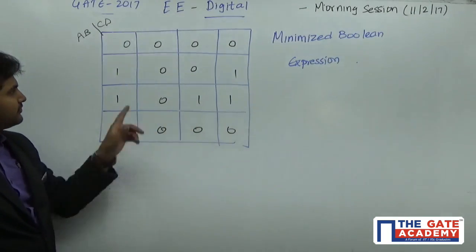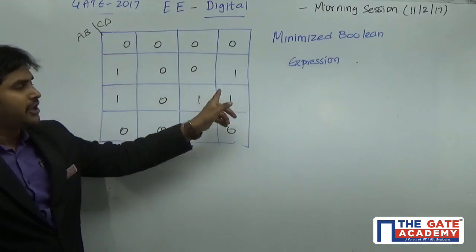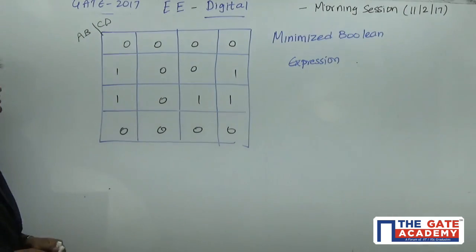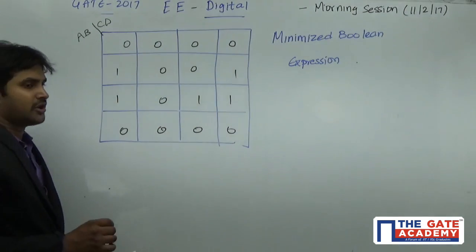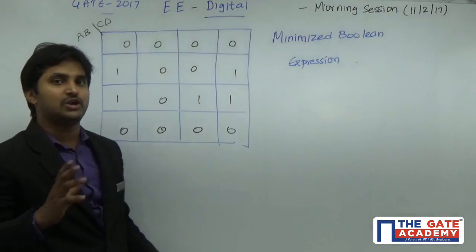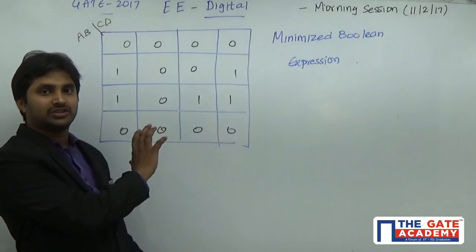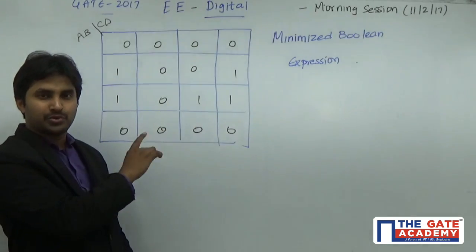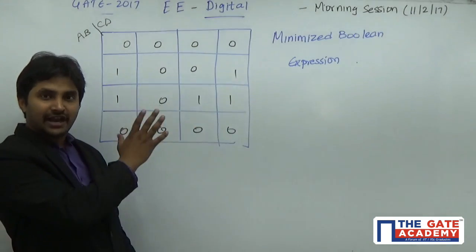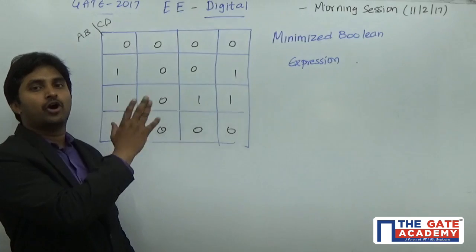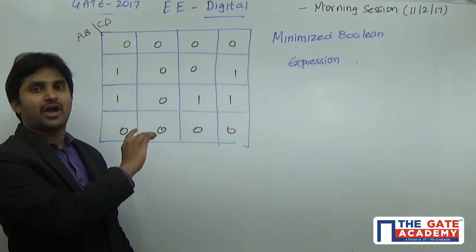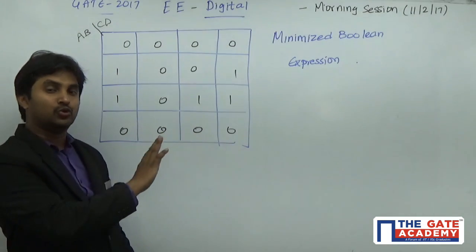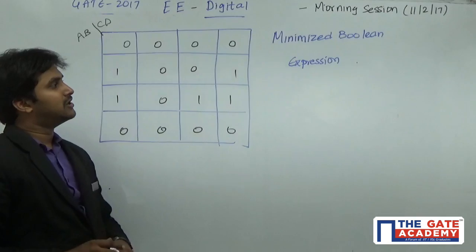If you observe, there are ones. If you are writing the SOP representation, we always try to look for the biggest group. If you have an octet group, we'll take that. If you don't have an octet group but you have a quad group, we'll take that. If you don't have that, then you go for a duet group.